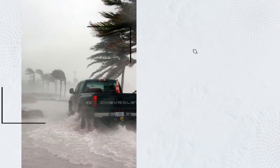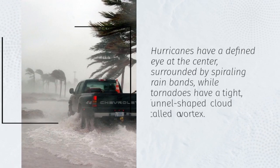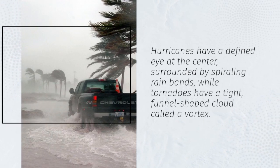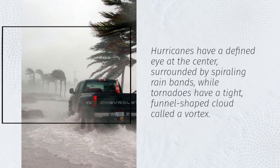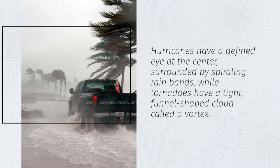Hurricanes have a defined eye at the center, surrounded by spiraling rain bands, while tornadoes have a tight, funnel-shaped cloud called a vortex.